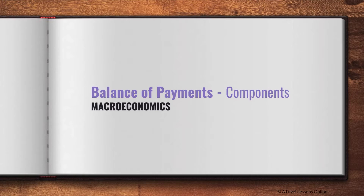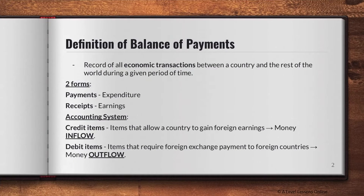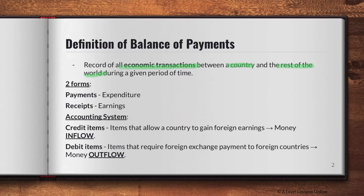So this first part we're going to be looking at the components of Balance of Payments. It's quite a lengthy video because there are quite a few components you need to know. The definition of Balance of Payments: it records all economic transactions that occur between a country and the rest of the world during a given period of time — essentially a record of everything flowing into and out of the country.